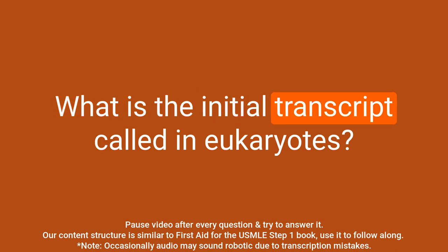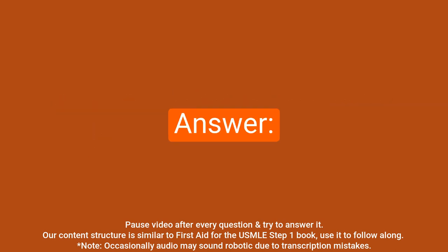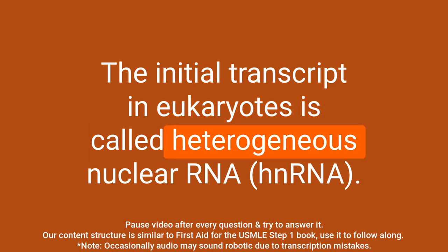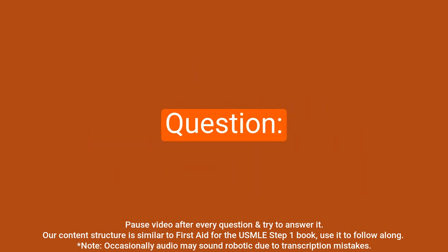Question: What is the initial transcript called in eukaryotes? Answer: The initial transcript in eukaryotes is called heterogeneous nuclear RNA (hnRNA).